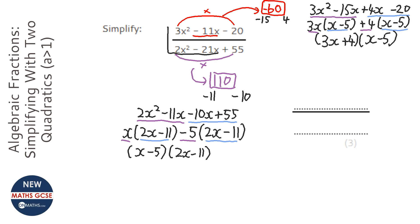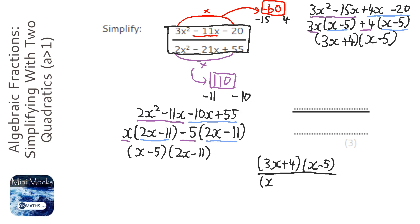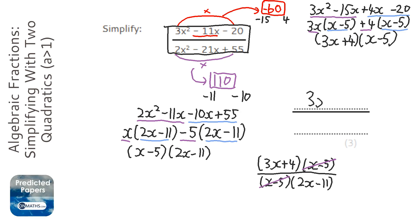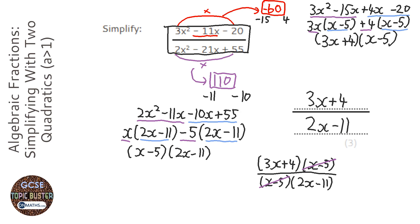Now we rewrite the fraction with its factorised versions. At the top we've got bracket 3x plus 4 times x minus 5. At the bottom we've got x minus 5 times 2x minus 11. We cross out the repeating bracket at the top and bottom — dividing top and bottom by x minus 5. So we're left with 3x plus 4 over 2x minus 11. These questions are great for practising factorising quadratics because you get two for the price of one. For your answer, you don't need to put the brackets.